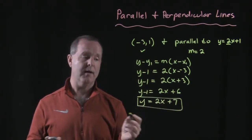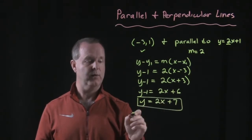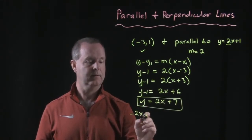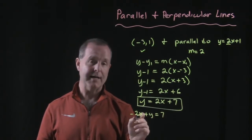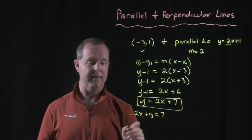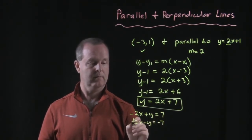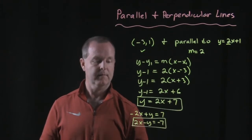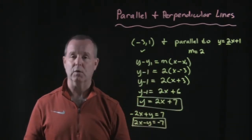Slope intercept form - if we wanted to write that in standard form, I can subtract 2x from both sides. And standard form begins with a positive coefficient of x, so I multiply everything through by -1. And there's the standard form equation of a line that meets those two criteria.